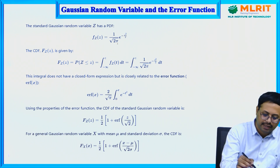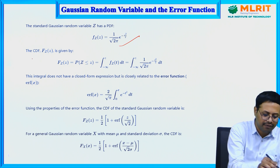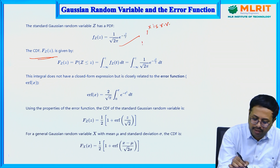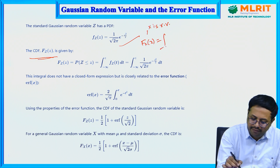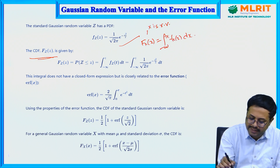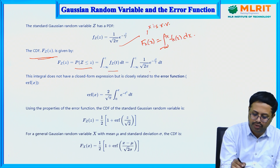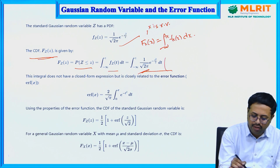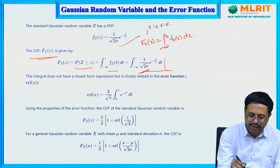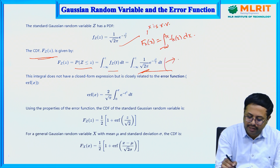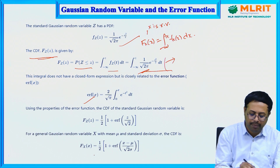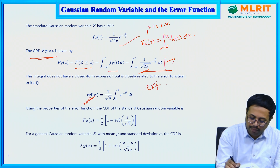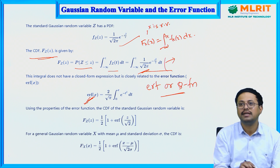To calculate the CDF (cumulative distribution function) of a Gaussian random variable, the definition is F(x) = integral from minus infinity to x of f(x) dx. The same is defined in terms of the standard Gaussian variable z. Since this integral is complex, we use approximations such as the error function (erf) or the complementary error function, or the Q function, to simplify the CDF.